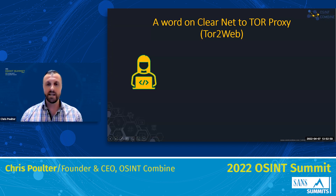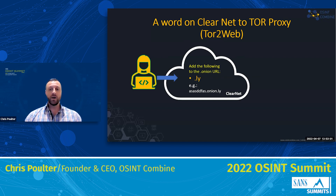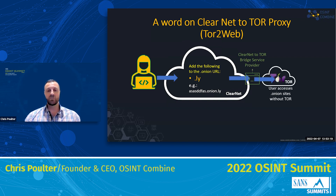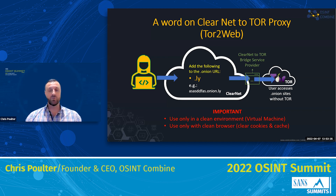A quick word on clearnet to Tor proxies: if you add .ly to any onion address you can access Tor without being on the Tor network — through your clearnet browser. There are other services but dot-ly seems most reliable. It'll act as a bridge service so you can get to onion addresses without Tor. Important though: use only in a clean environment because you don't want to pass data through a potentially compromised service or be affected by malware.